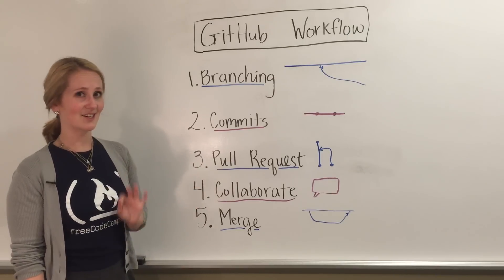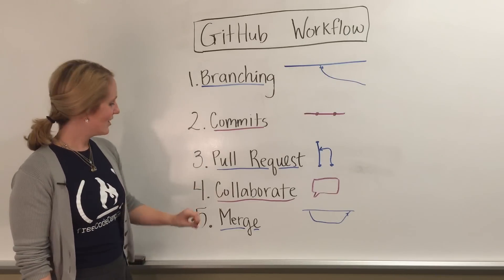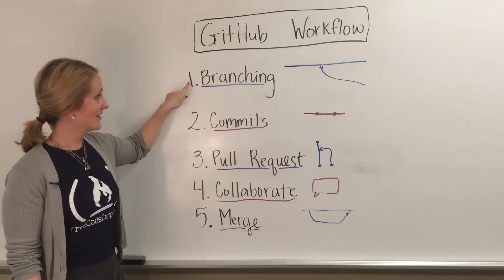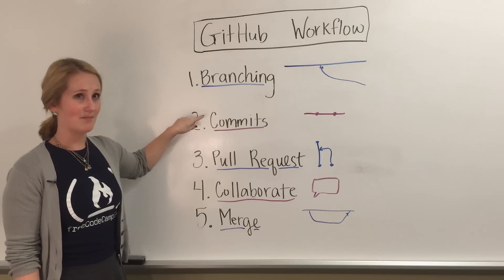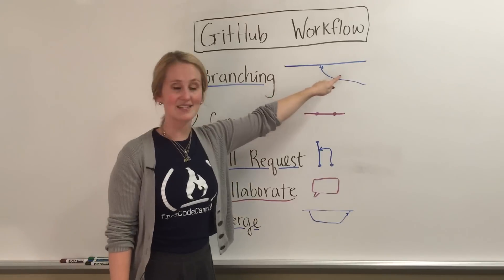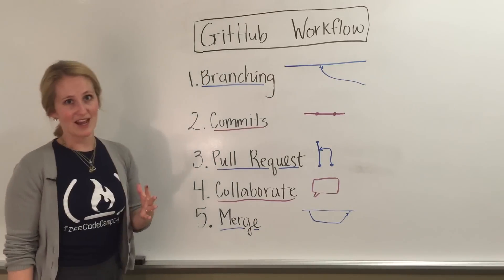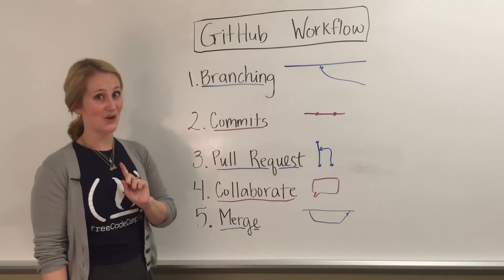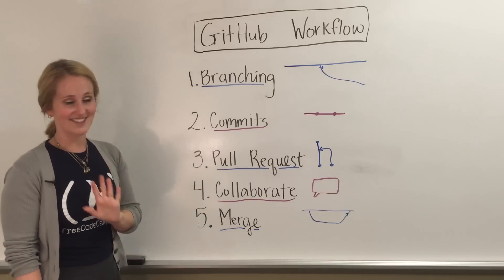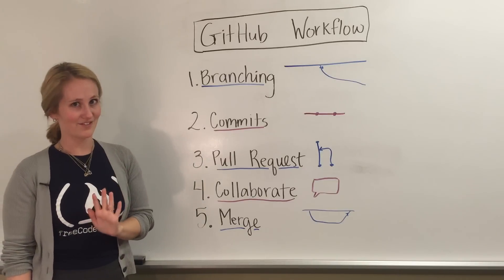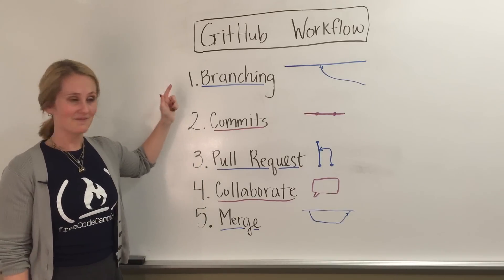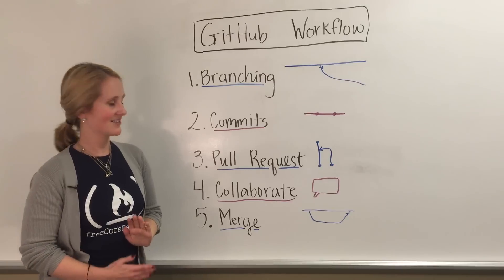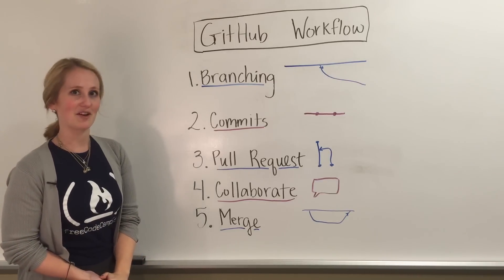Once you've reached a consensus that it's in a good place, you merge. When you merge, you're taking the branch you created and the commits on that branch and putting them back into master, so all of those snapshots are in the production branch. Just remember the five basic steps for the GitHub workflow: create a branch, make some commits, open up a pull request, collaborate, and merge your branch.